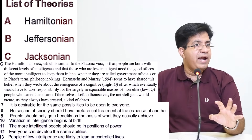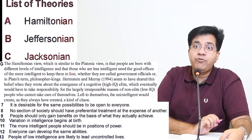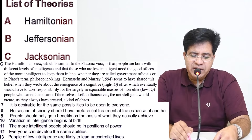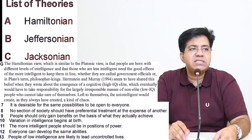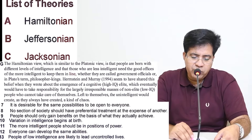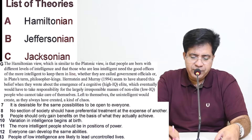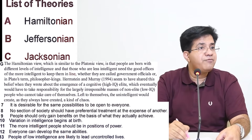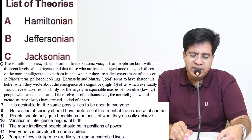Now go to the questions and read each one carefully. Question 7: 'It is desirable for the same possibilities to be open to everyone' — not related to Hamiltonian, leave it. Question 8: 'No section of society should have preferential treatment at the expense of another' — leave it. Question 9: 'People should only gain benefits on the basis of what they actually achieve' — leave it.